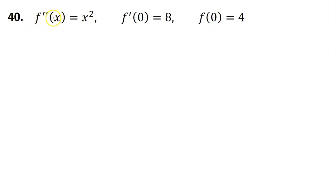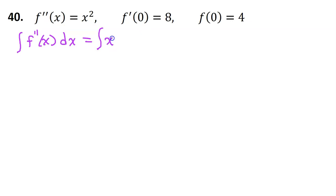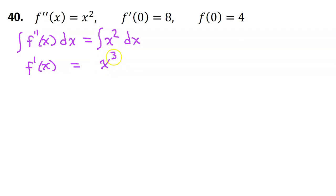This one has a second derivative in it, so we're going to have to integrate twice. Integrating both sides of the equation: we have the integral of f double prime of x on the left-hand side, and on the right-hand side, the integral of x squared dx. So the integral of f double prime gives you f prime. On the right-hand side, we will use the power rule for integration — increasing the exponent by 1 gives us x to the third power, then we divide by that new power, putting one-third in the front. And then we will put plus c for the constant of integration.